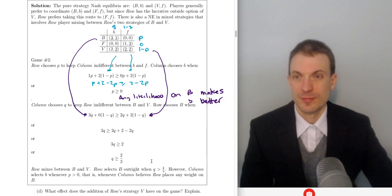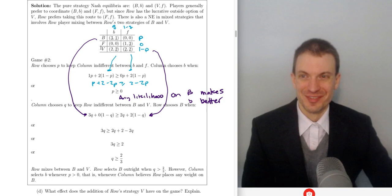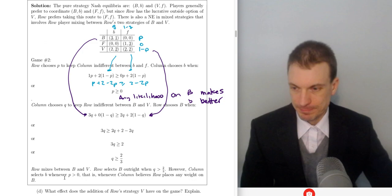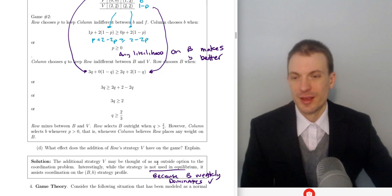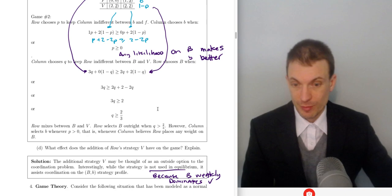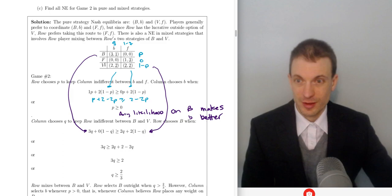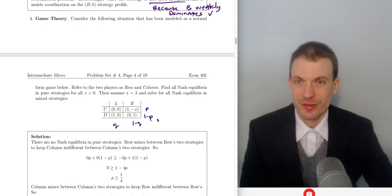Column selects B whenever it believes row places any weight on B. We ignored F because column is choosing Q to keep row indifferent between B, F, and V — but row is not indifferent between B and F or V and F. Row strictly prefers V to F, and some mixture of B and V over F. So F is eliminated; column doesn't have to take any action to make row not want to play F. The additional strategy V — this outside option — is helping coordination on the BB outcome because B weakly dominates V for the column player: the outcome from B is weakly preferred to the outcome from playing V.